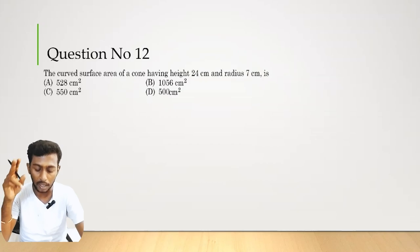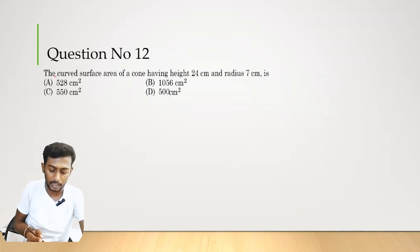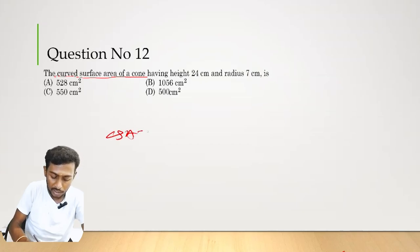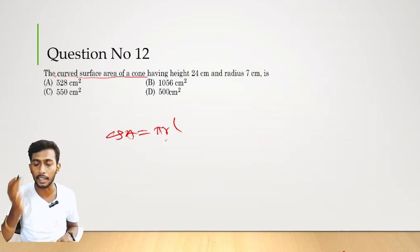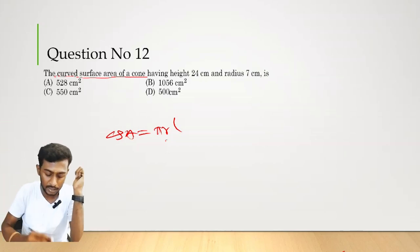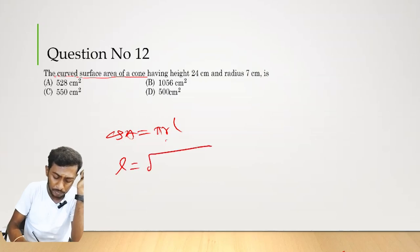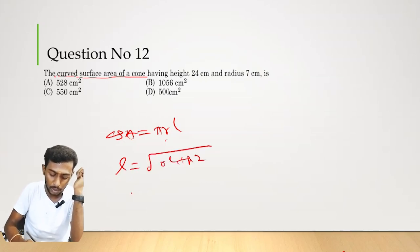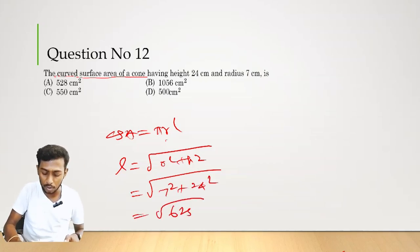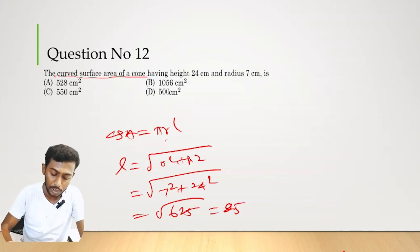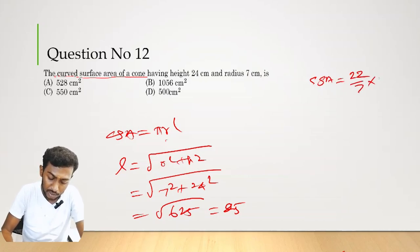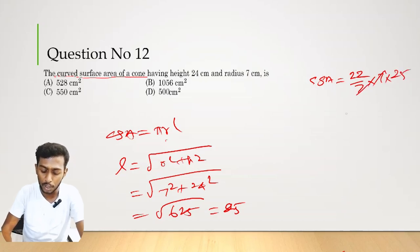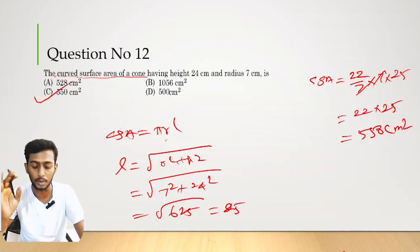Question number 12. The curved surface area of a cone with height 24 cm and radius 7 cm. CSA of cone = πRL where L is the slant height. L = √(r² + h²) = √(7² + 24²) = √(49 + 576) = √625 = 25. CSA = (22/7) × 7 × 25 = 22 × 25 = 550 cm². Option C is the correct answer.